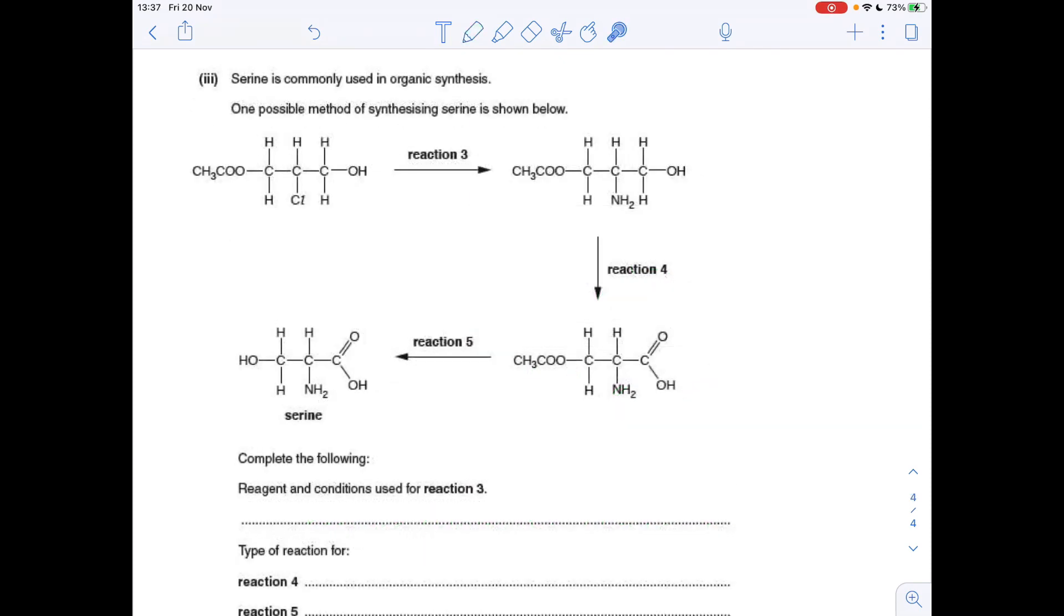Next part of the question, reagent and conditions for reaction three. Effectively, we're going from a halogen alkane to an amine. That's brought about by ethanolic ammonia. So the reagent is ammonia, and the conditions are it has to be in ethanol.